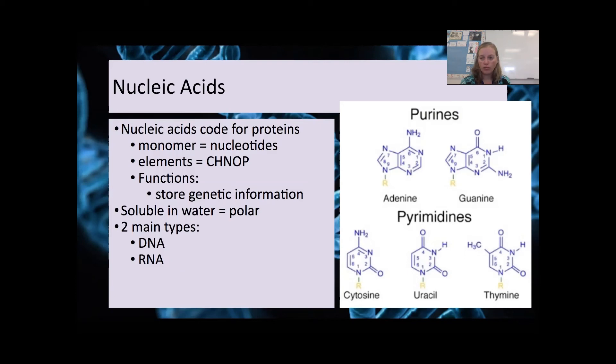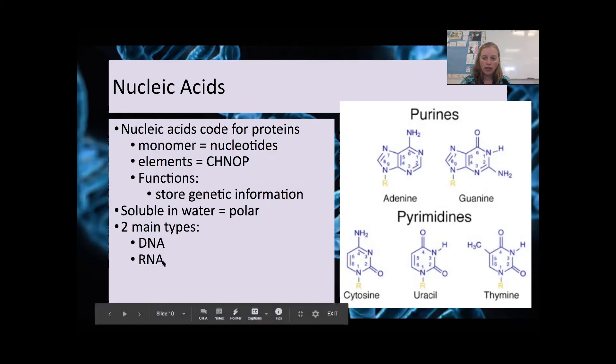So nucleic acids only have one function. They code for the order that amino acids are going to be assembled to give you a protein, and that's what we call your genetic information. There are two main types of nucleic acids, DNA and RNA, and they both use the monomer nucleotides. Now keep in mind that nucleotides have these nitrogenous bases. DNA is going to use A, G, T, and C.